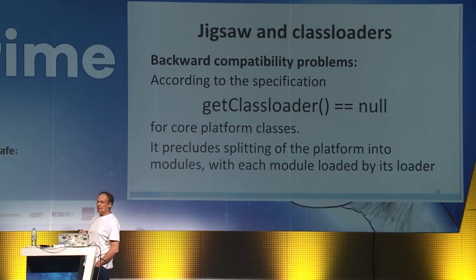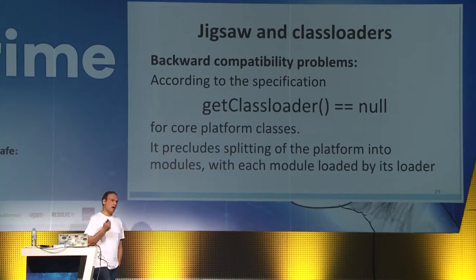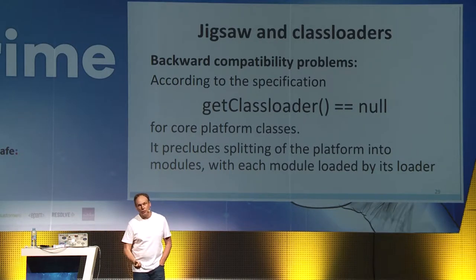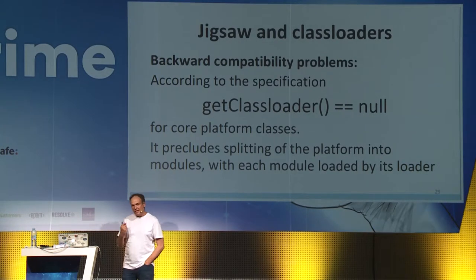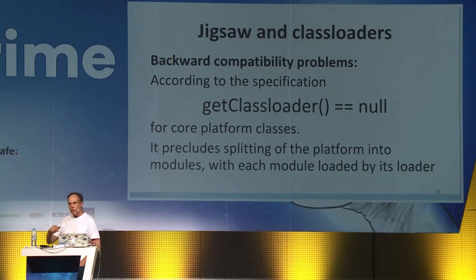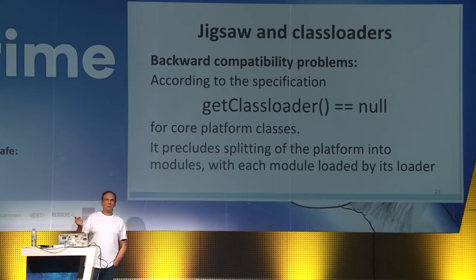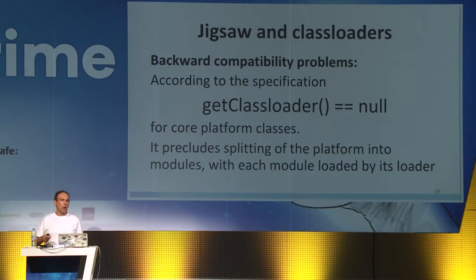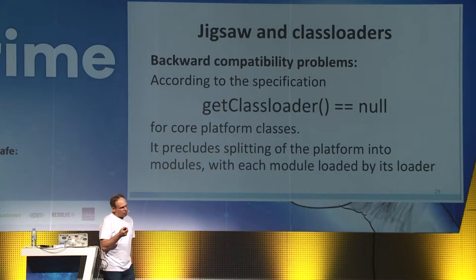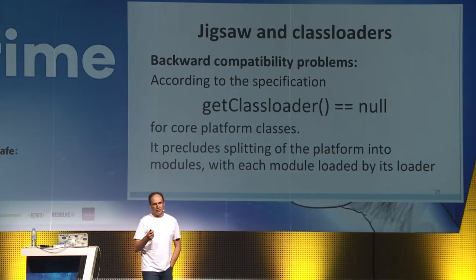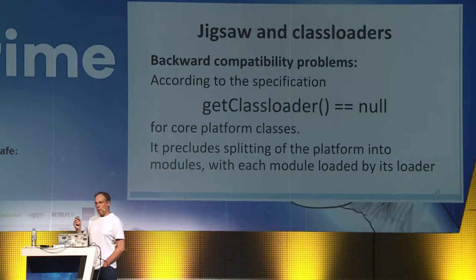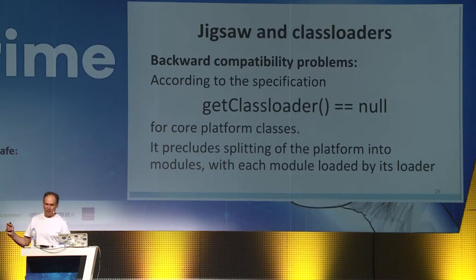Backward compatibility is still a holy cow for Java. JDK developers work really hard to ensure that everything guaranteed by the Java specification of previous versions is satisfied in newer versions. That's why applications that work on an older version usually work on a newer version of Java without problems — unless your application relies on unspecified behavior of a particular Java SE implementation.